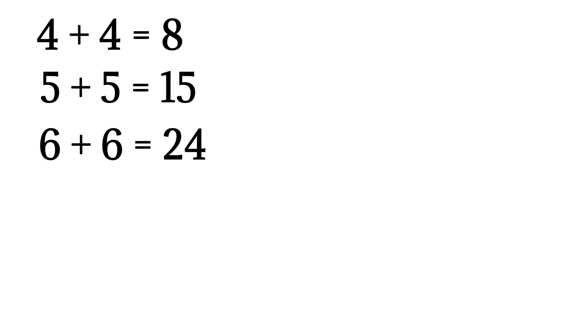In this problem, if we multiply 4 by 2 we get 8. And multiply 5 by 3 we get 15. Then multiply 6 by 4 we get 24. So we can clearly see that as the number increases by 1, its multiplier also increases by 1.